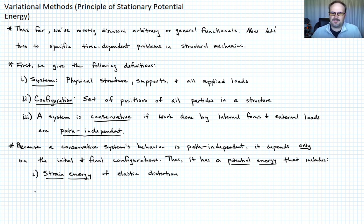And the second feature of potential energy is going to be the potential energy of the applied loads. We usually define strain energy and we denote it with U. And we denote the potential energy of the applied loads with omega.